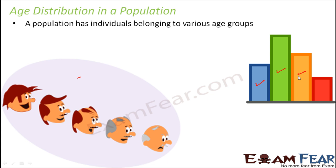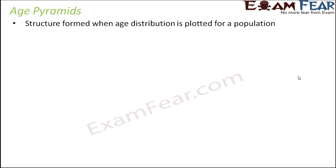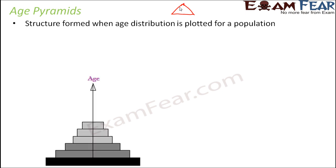The best way to describe age distribution in a population is with the use of age pyramids. These are structures formed when the age distribution is plotted for a population. For every population, we will see a specific pattern of this pyramid. It is called a pyramid because it is in the shape of a pyramid. Let's have a look at an age pyramid.